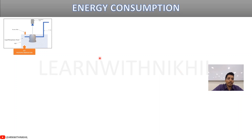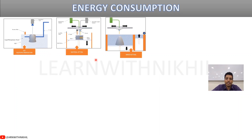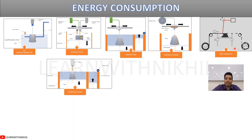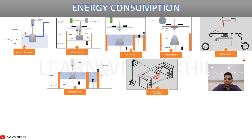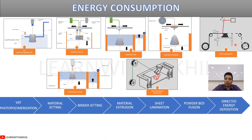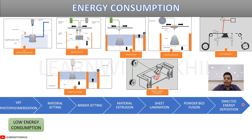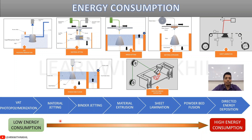To summarize, the 3D printer types covered are: vat photopolymerization, material jetting, binder jetting, material extrusion, sheet lamination, powder bed fusion, and directed energy deposition. These are also arranged by energy consumption — vat photopolymerization has the lowest energy consumption, while directed energy deposition has the highest, requiring many kilowatts because laser is the primary energy source. This concludes the classification of 3D printers and their energy consumption.